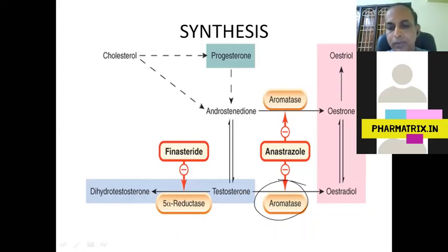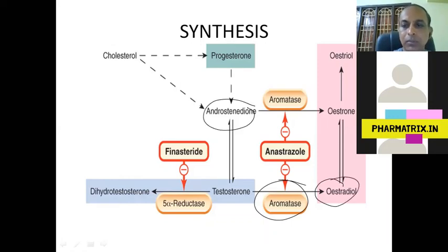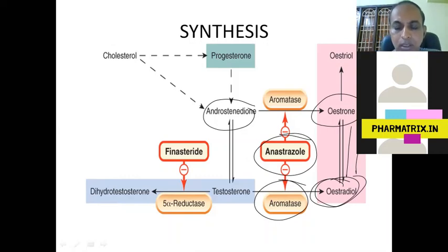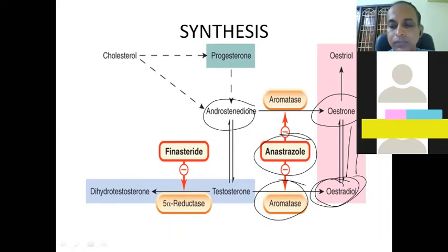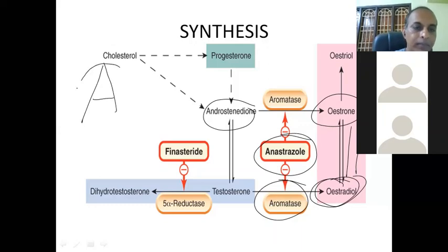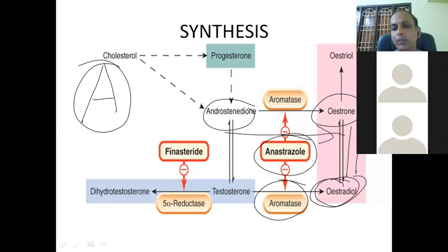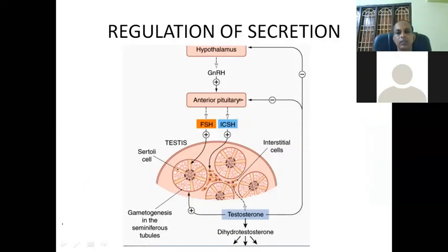Testosterone is converted to estradiol and androstenedione is converted to estrone via aromatase; these are interconvertible. The aromatase inhibitor available is anastrozole. Regarding structure, testosterone has four rings — A, B, C, D — and it is specifically the A-ring of testosterone that is aromatized, converting the male sex hormone to a female sex hormone.